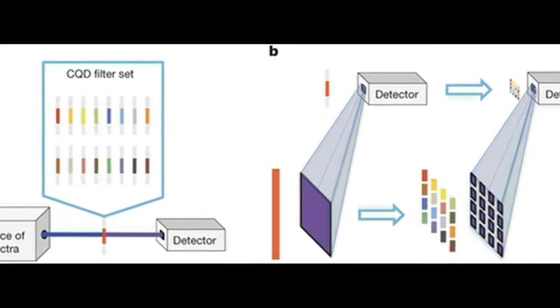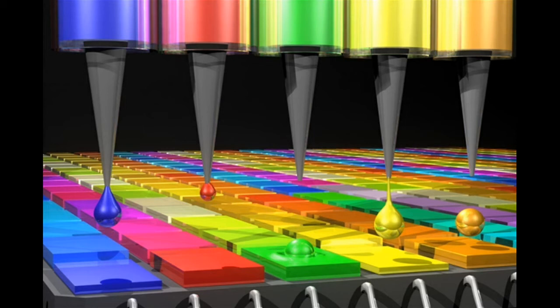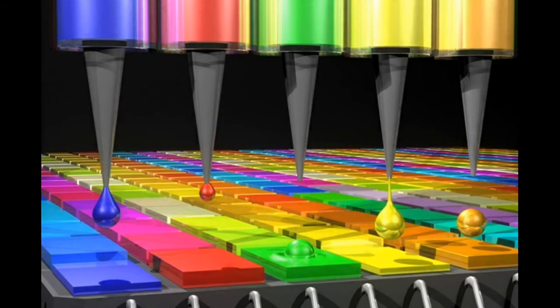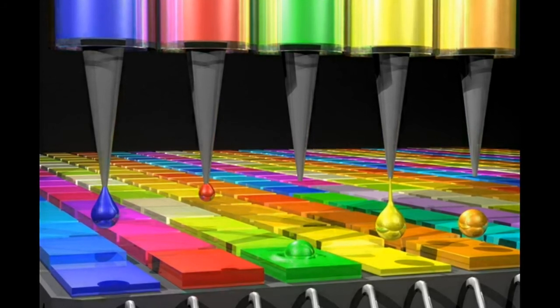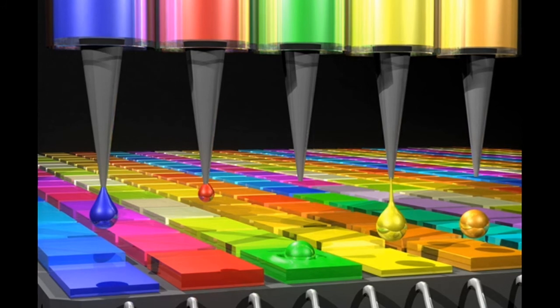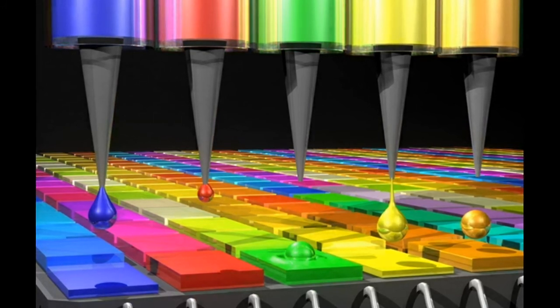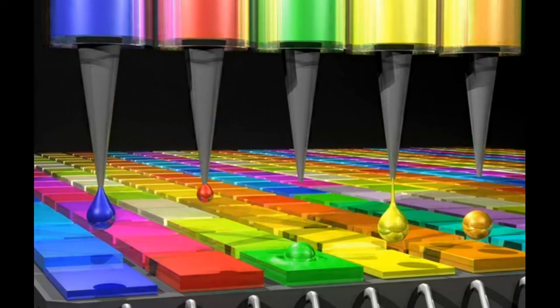The researchers created an algorithm that analyzes the percentage of photons absorbed by each filter, then recombines the information from each one to calculate the intensity and wavelength of the original rays of light.